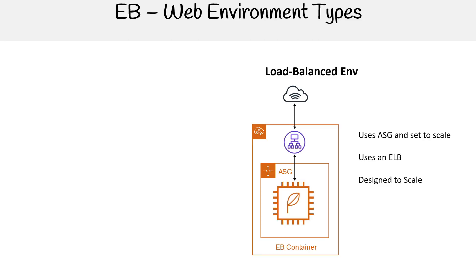For web environments, we have two types. The first is the load balancer environment, which uses an auto scaling group to scale and an elastic load balancer. If you need a load balancer, this is the one you can utilize. There's obviously a lot more flexibility having a load balancer because it's very easy to attach a custom domain.